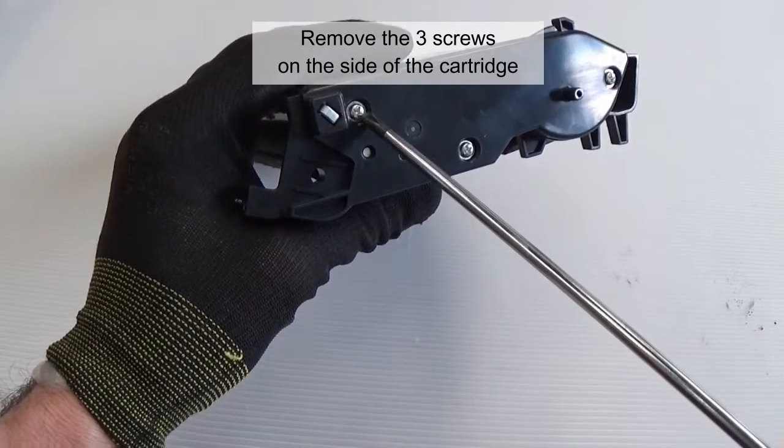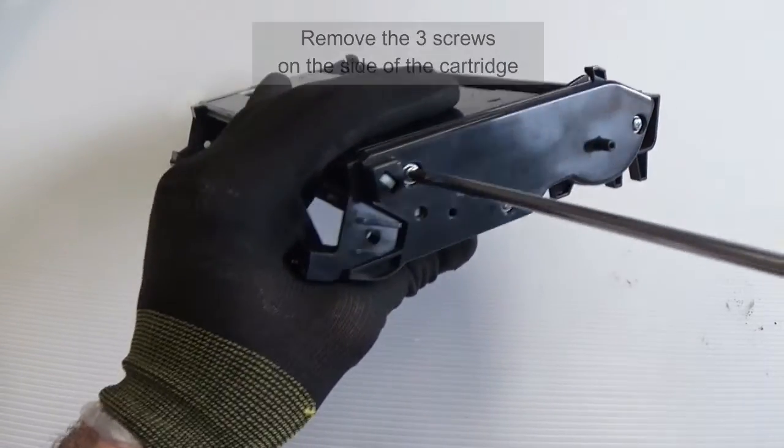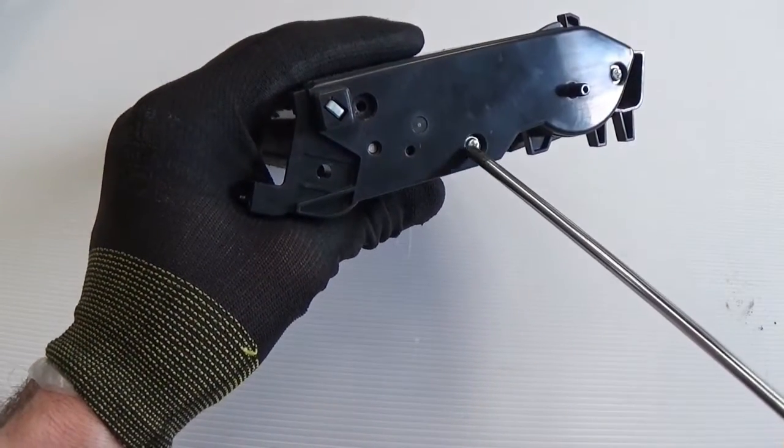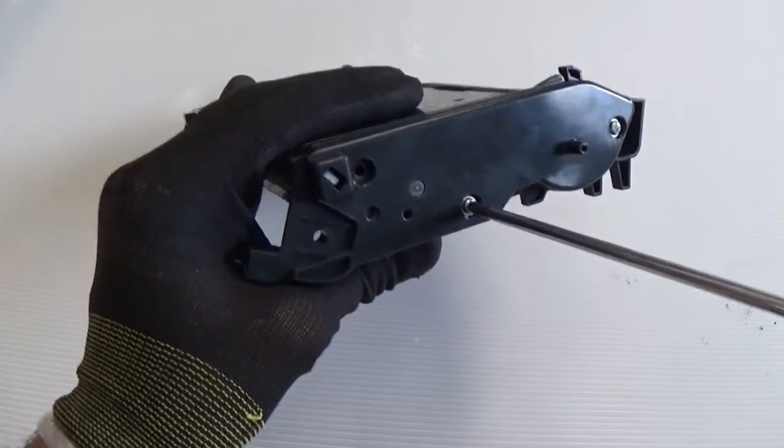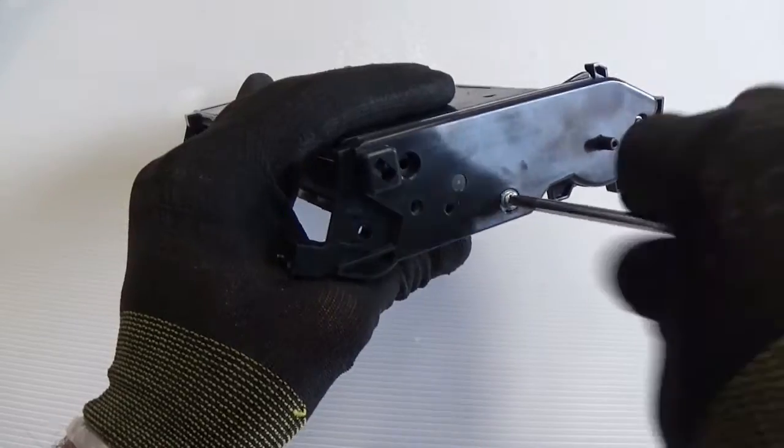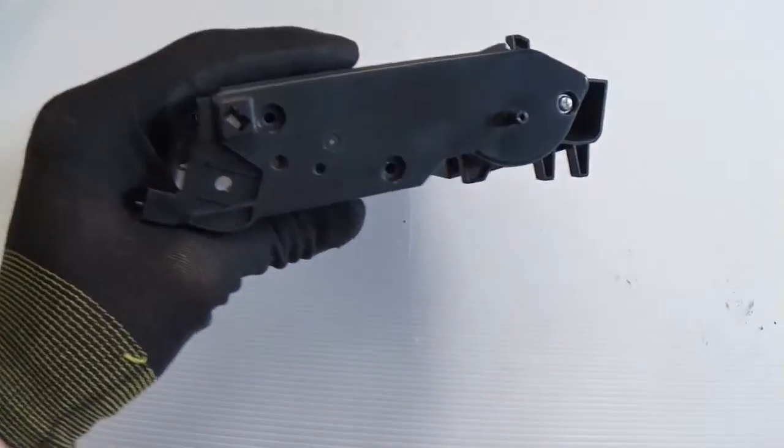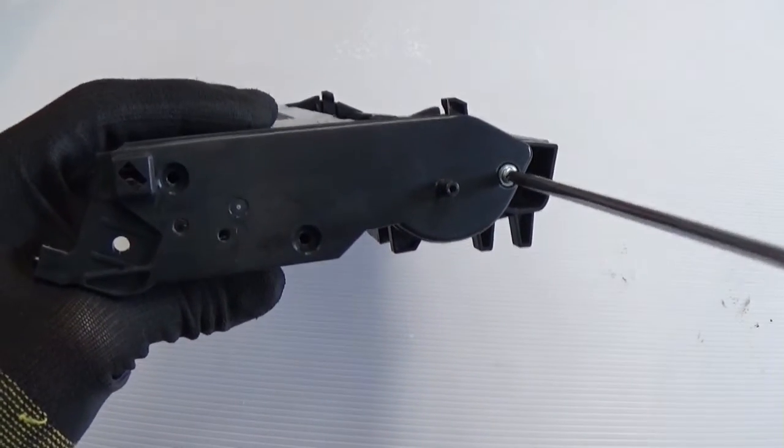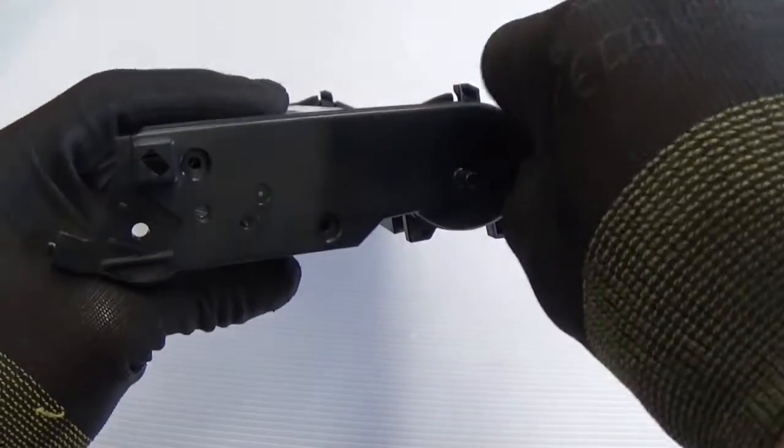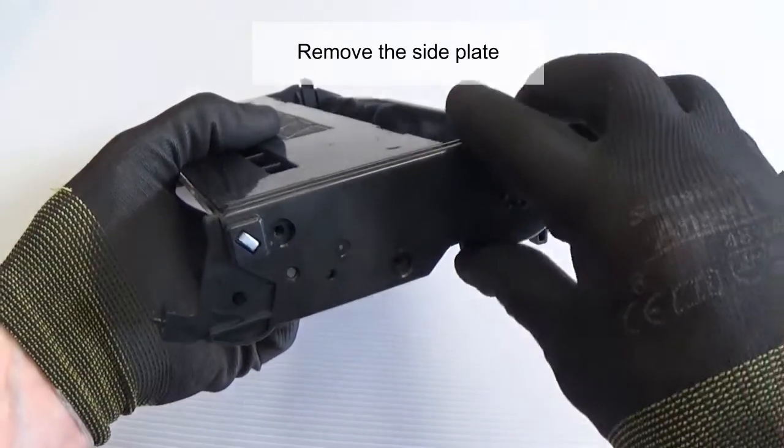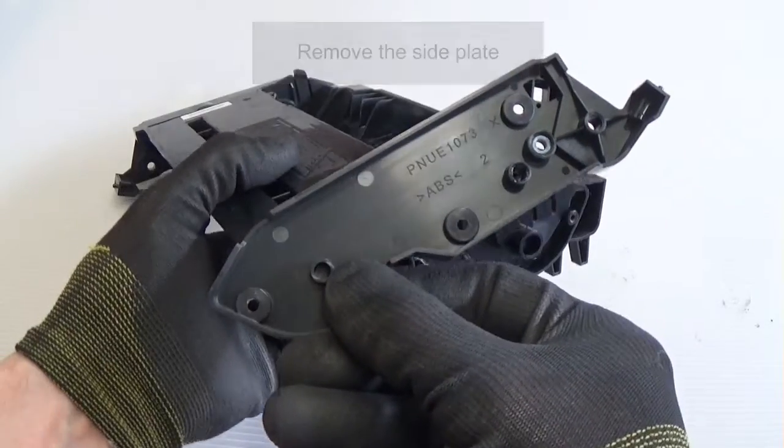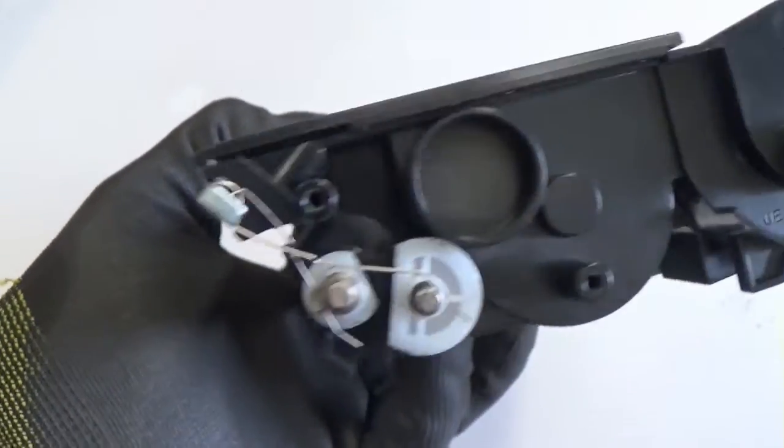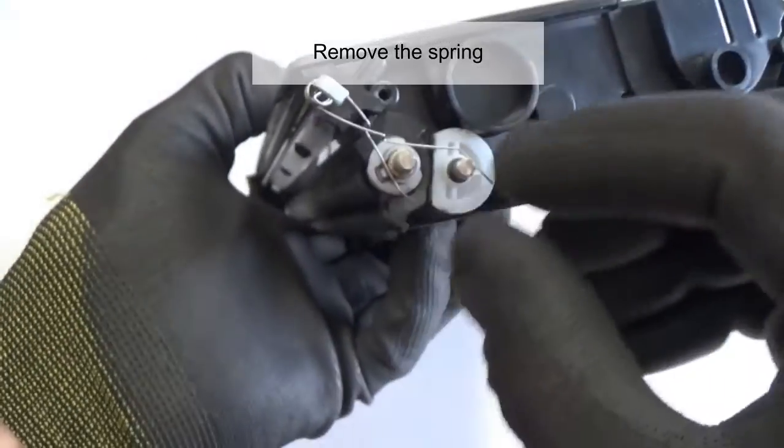Remove the three screws on the side of the cartridge. Remove the side plate. Note the position of the spring. Remove the spring.